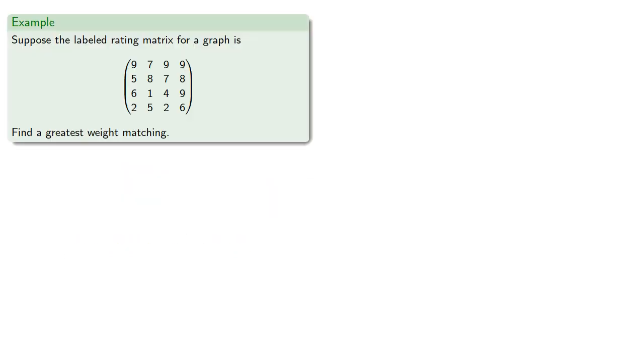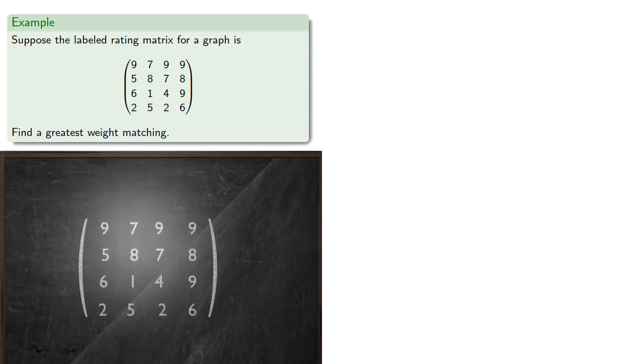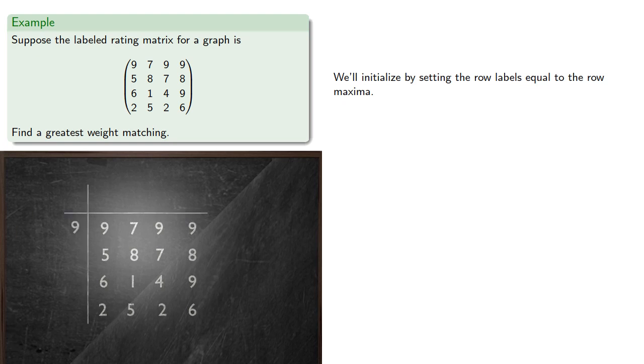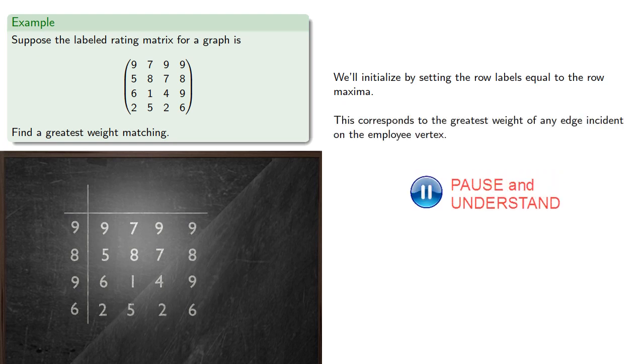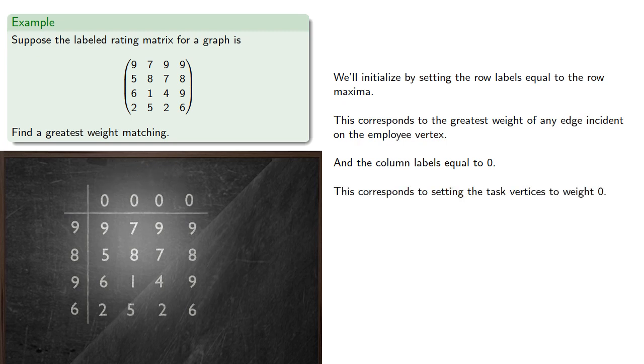So let's try it out. We already know the answer to this one because we've solved this in graphical form. Let's solve this in matrix form. We'll initialize by setting the row labels equal to the row maxima. This corresponds to the greatest weight of any edge incident on the employee vertex. And the column labels will be equal to zero. This corresponds to setting the task vertices to weight zero.